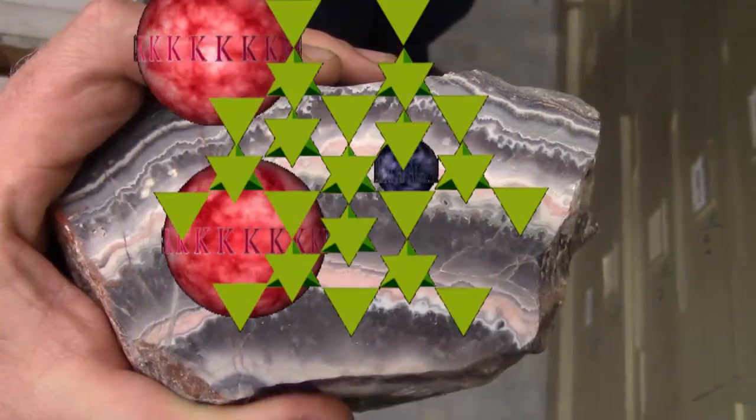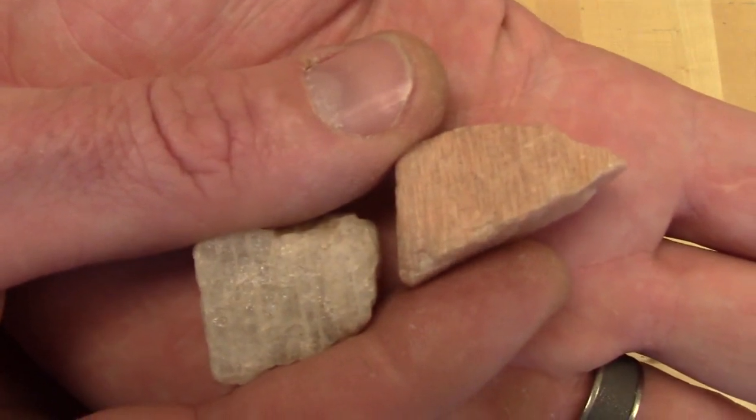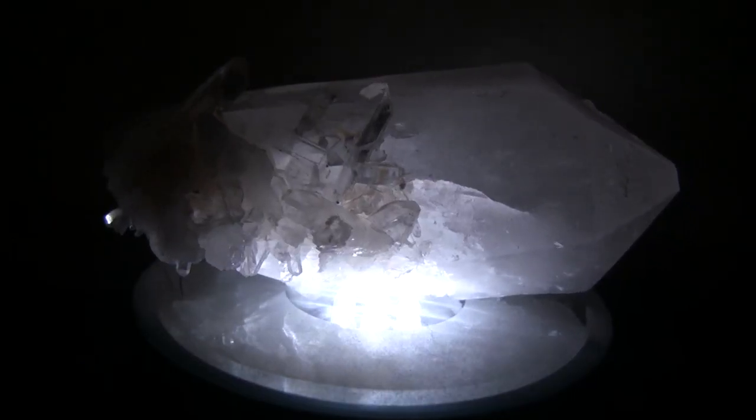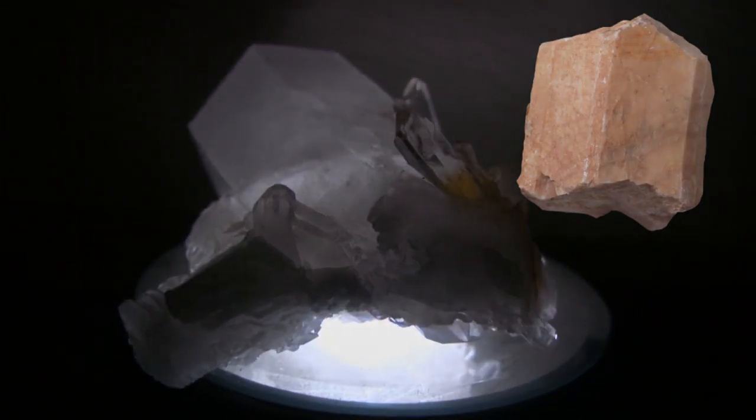Our exploration of silicate minerals will follow a logical progression from the most to least common. Almost half of the minerals making up the Earth's crust are feldspars, and another quarter to quartz. We will cover three-fourths of all the minerals you will ever encounter in the next episode, the feldspars and quartz.